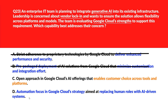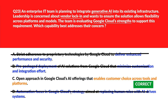Option D says an automation focus in Google Cloud's strategy aimed at replacing human roles with AI-driven systems. A workforce-reduction focus doesn't address platform flexibility or vendor strategy — delete. Option C is the right answer.